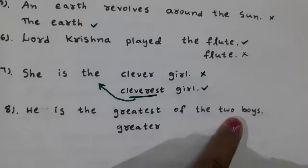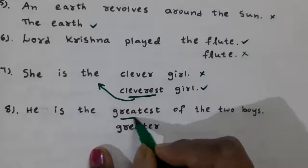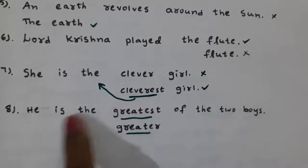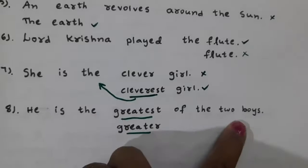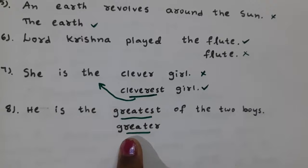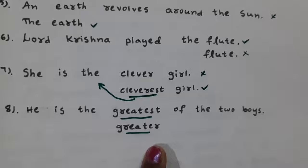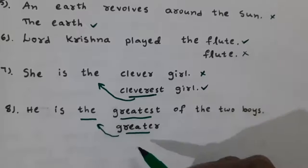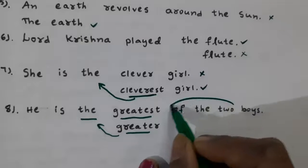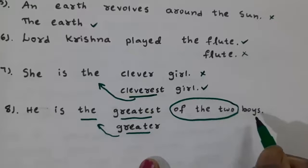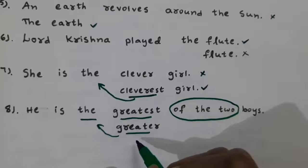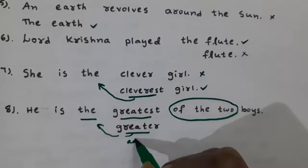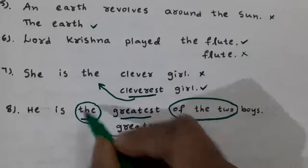Next: 'He is the greatest of the two boys' versus 'He is the greater of the two boys.' 'The' is used before a comparative adjective when indicating a selection between two persons. Whenever you see 'of the two', the comparative adjective form must be used with the definite article 'the' before it.